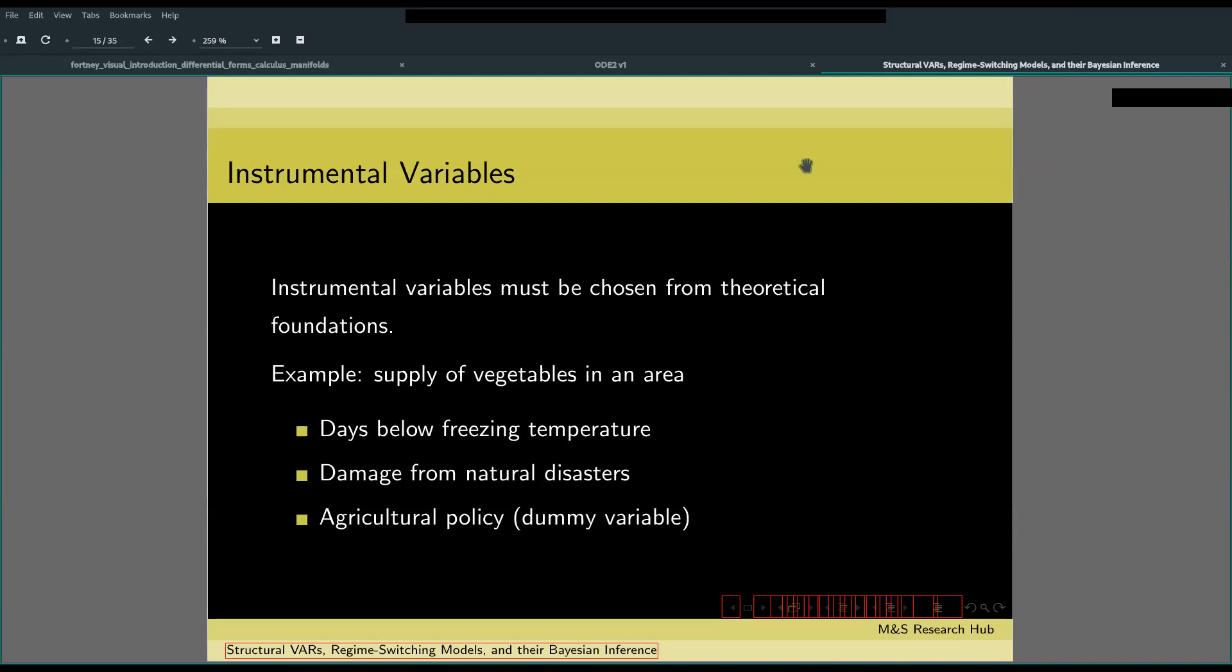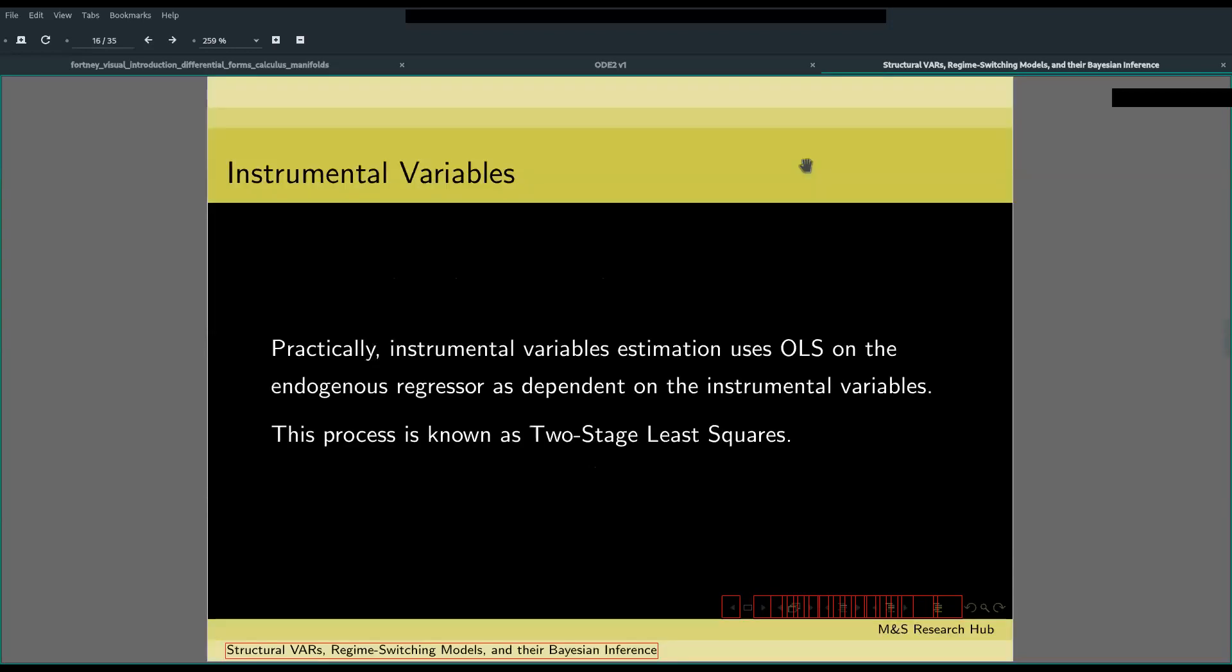If we take the supply of vegetables, for example, we might use as instrumental variables days below freezing temperature, damage from natural disasters, or even agricultural policy, which may be stated as a dummy variable. The process of estimating endogenous variables on instrumental variables is called identification.